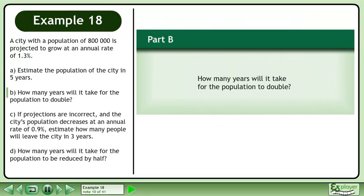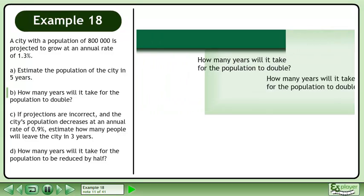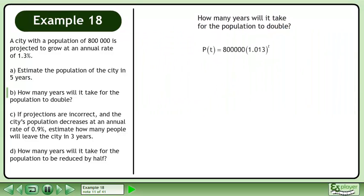Now we'll move on to Part B. How many years will it take for the population to double? Rewrite the function from Part A, p of t equals 800,000 times 1.013 raised to the power of t. Plug in 1,600,000 for the future population. This is double the initial population of 800,000.